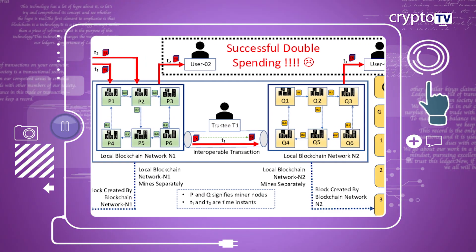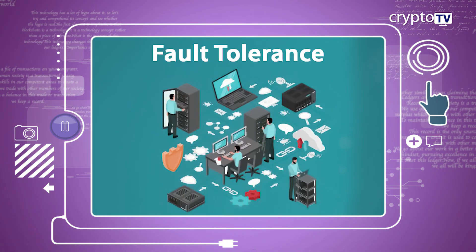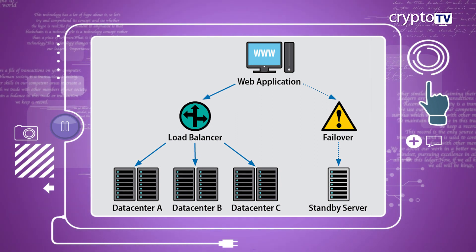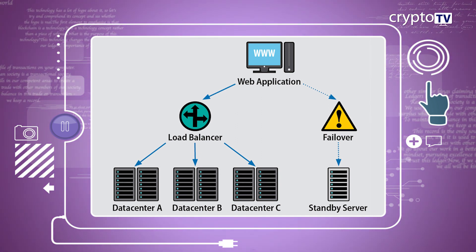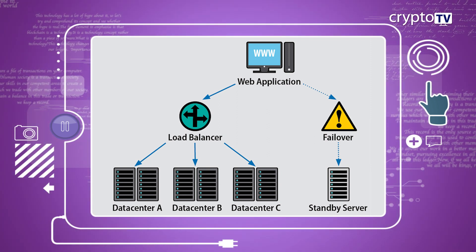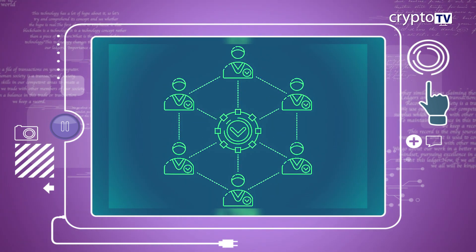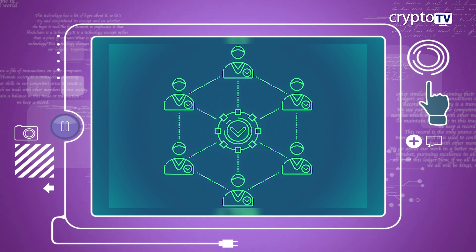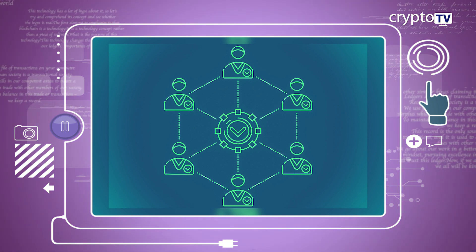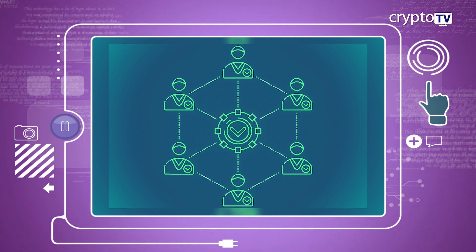Thirdly, the system should not allow anyone to cheat — it must prevent double spending. Fourthly, the system is supposed to be fault-tolerant, so much so that if a section of the network fails to perform at any point in time, the rest of the network should be able to continue business seamlessly and keep providing consistent and reliable results. Last but not the least, the consensus algorithm must be designed in a way that ensures equality among all participants, so that no one can take any unfair advantage from the system.